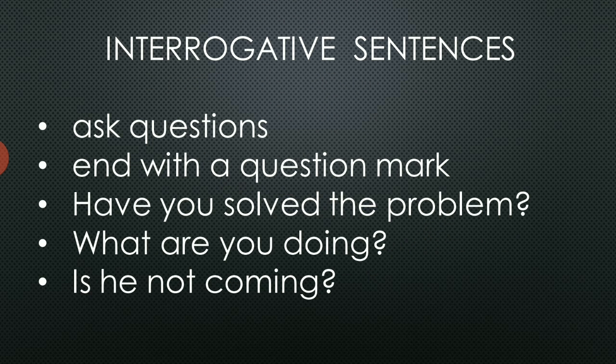Next, we move to the second type: interrogative sentences. These sentences ask questions and always end with a question mark. There are yes/no question forms, WH interrogative forms, and interrogative negative forms. The structure of a yes/no question form is: helping verb plus subject plus main verb plus object. For example, 'Have you solved the problem?' — 'have' is the helping verb, 'you' the subject, 'solved' the main verb, and 'the problem' the object, followed by a question mark.